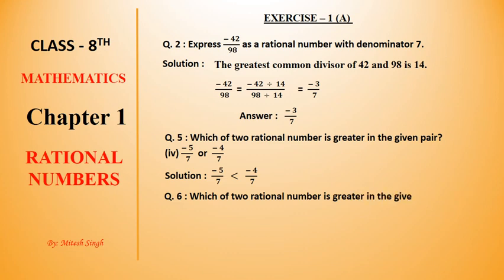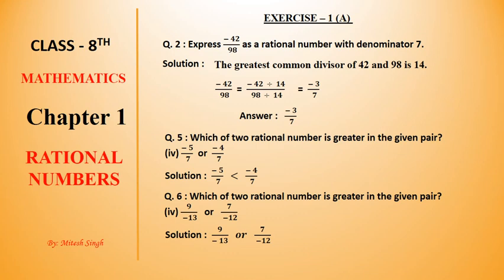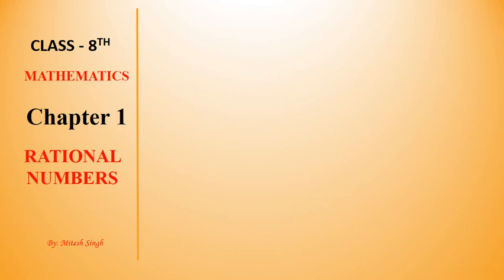Question number 6, fourth part: Which of the two rational numbers is greater? Here the denominators are different. The method used to solve this is cross multiplication. We cross multiply: 9 multiply by minus 12, and 7 multiply by minus 13. The answers are minus 108 and minus 91. Minus 91 is greater than minus 108.